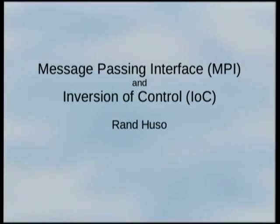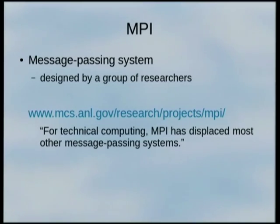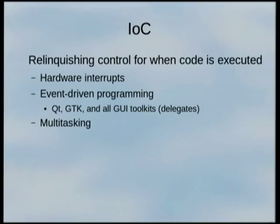Message passing interface and inversion of control. MPI is on clusters, supercomputer clusters, or even on your desktop. It's how an application communicates with another instance of itself — the de facto standard for writing software to run on clusters or multi-core machines. IoC, inversion of control, is the idea that you're waiting for an event to happen and you'll process it when it happens. The framework is in control, not you — just like your UIs.